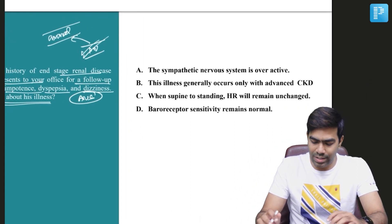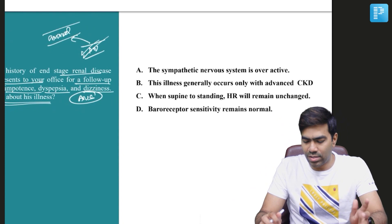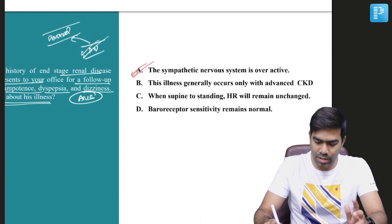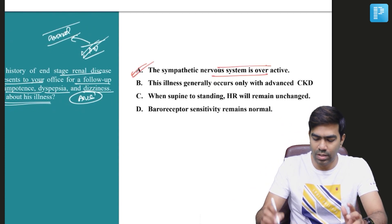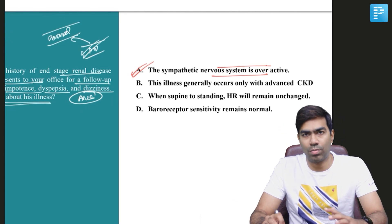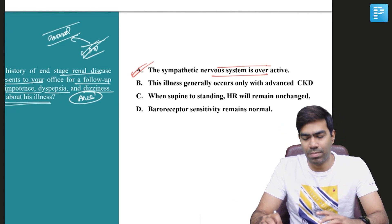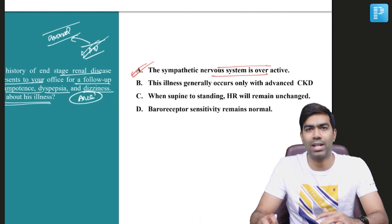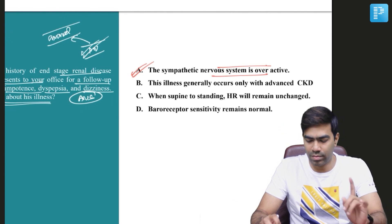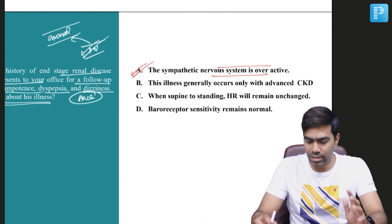So which of the following is correct? The sympathetic nervous system is overactive — that is the right statement. In patients with uremia-induced autonomic neuropathy, the sympathetic nervous system will be hyperactive and the parasympathetic nervous system will be hypoactive. That is a very important point. So option A is correct.